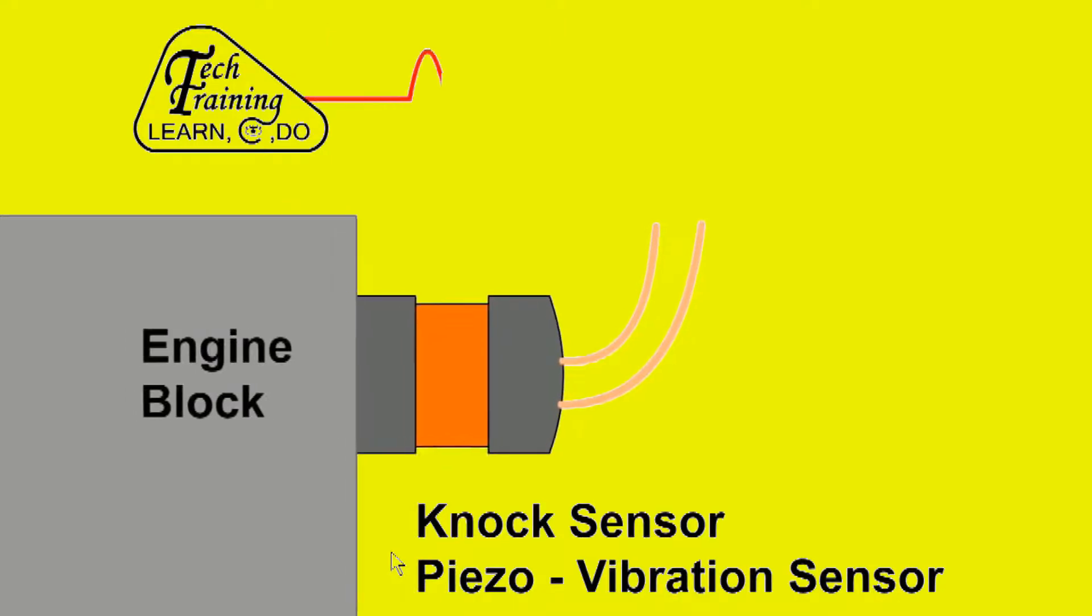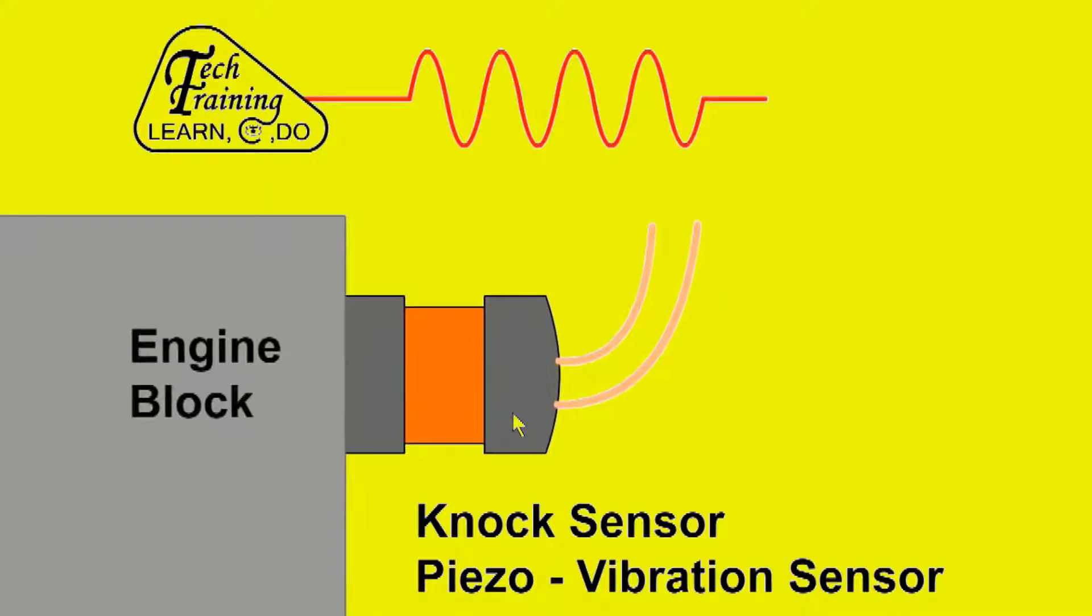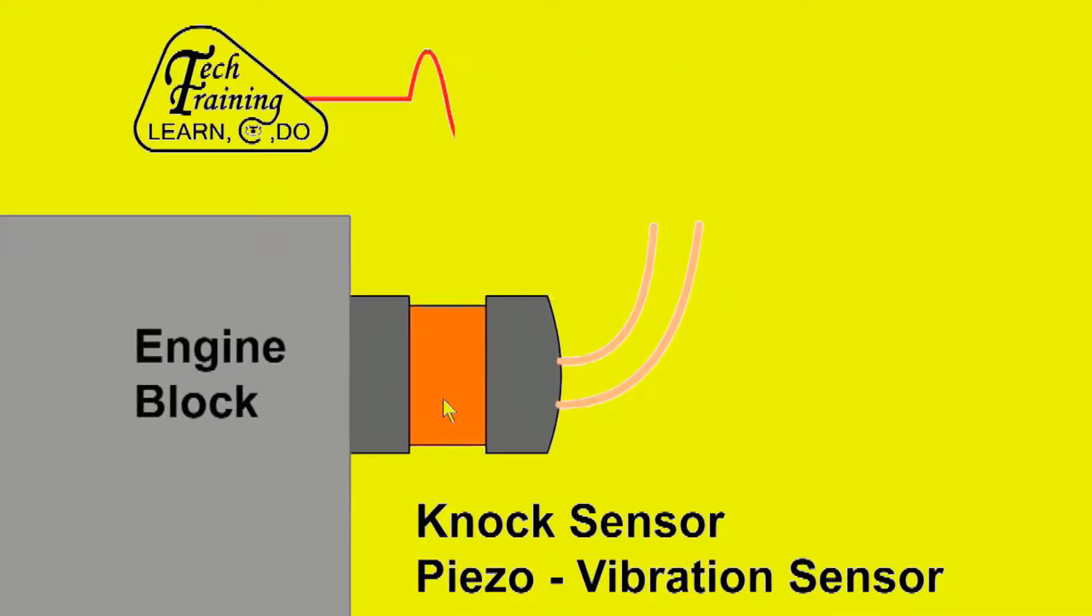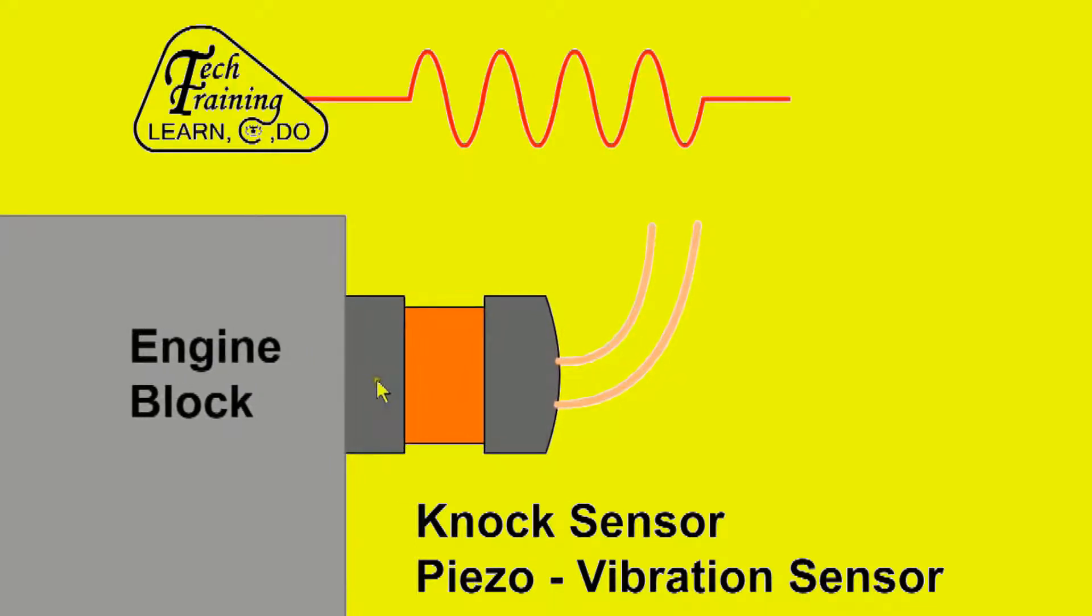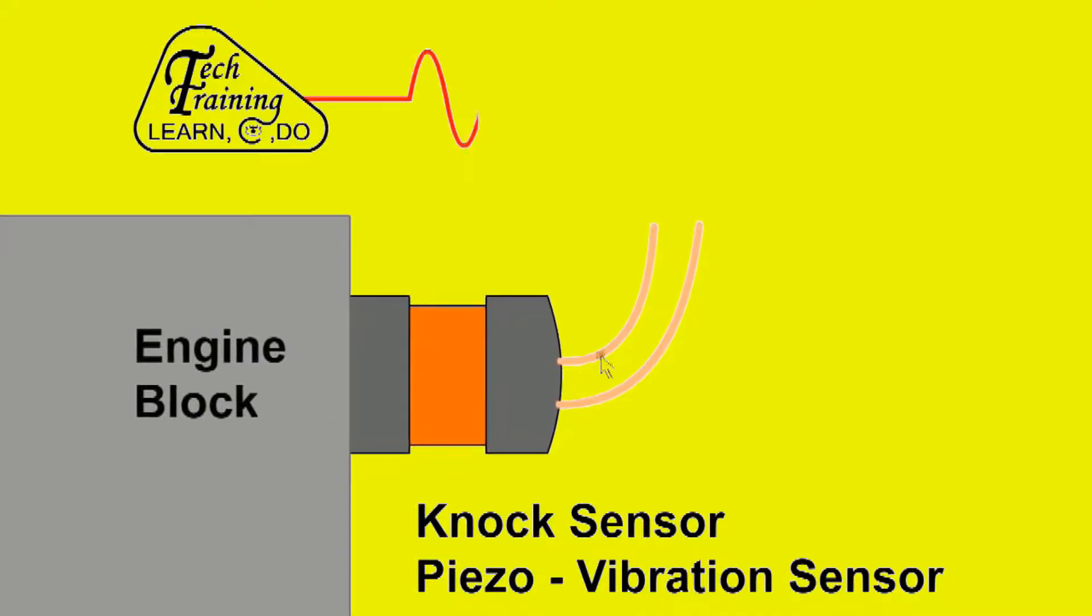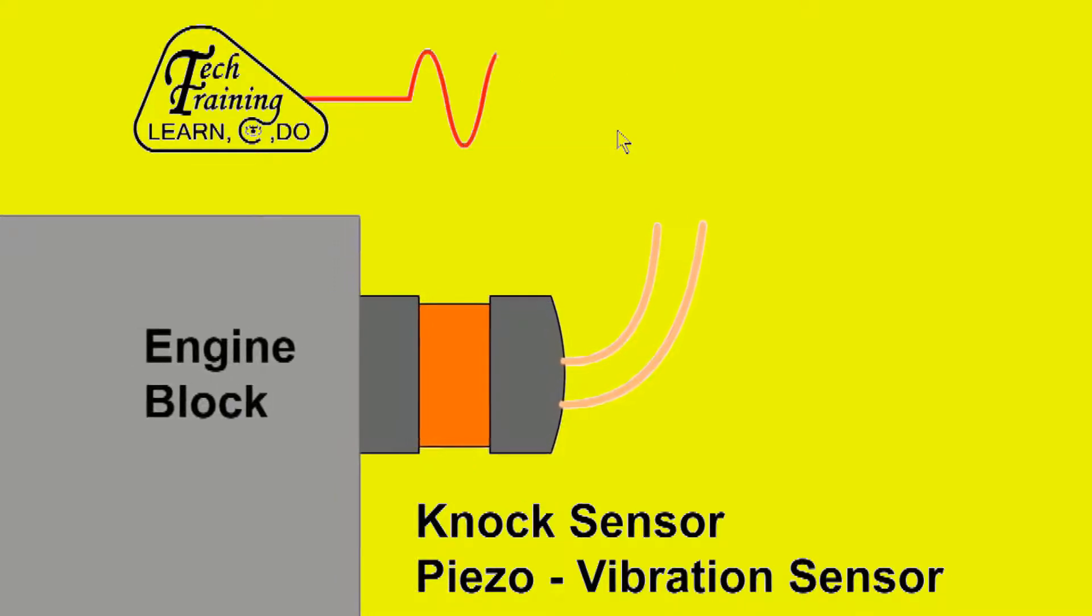The knock sensor allows the ECU to listen to the engine. It is based on a vibration sensor which consists of a piezoelectric element and is attached to the engine block. The energy from the vibrating cylinder block is converted into an electrical signal for the ECU. When the onset of combustion knock is detected, the ECU will make appropriate alterations to the timing.